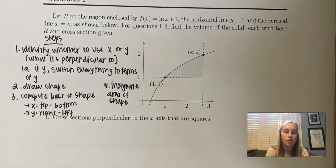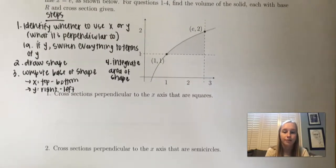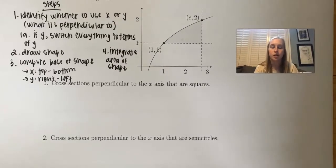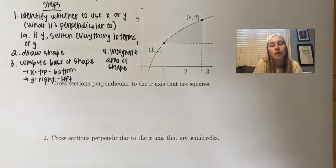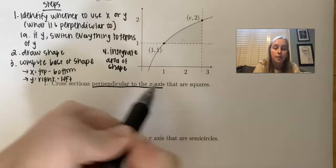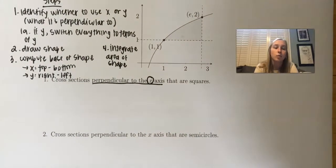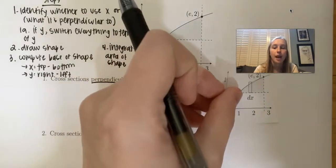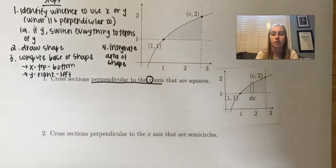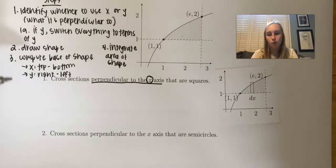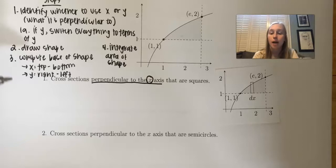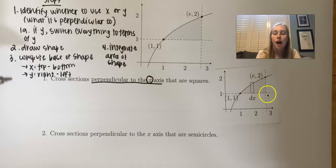So for question one, we're finding cross sections perpendicular to the X axis that are squares. Step one: it's perpendicular to the X axis, so we're using X values and doing top minus bottom for the base. A helpful technique my teacher taught me is to draw a vertical rectangle within the shaded area to signify the base — it's vertical because it's perpendicular to the X axis.